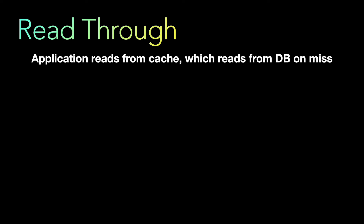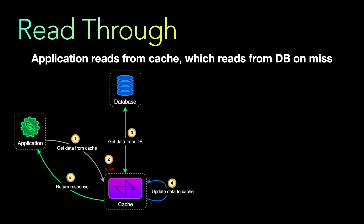The next strategy is the read-through strategy. In read-through, the application reads from the cache, and the cache reads from the database on a cache miss. Looking at the pattern: the application gets data from the cache; if there is a cache miss, the cache talks to the database directly, gets the data, updates the cache, and then returns the response to the application. The application does not talk to the database directly in this strategy.